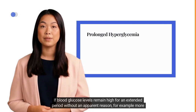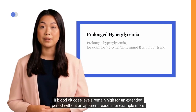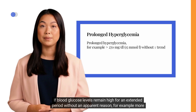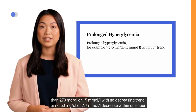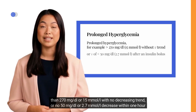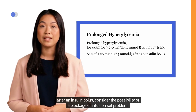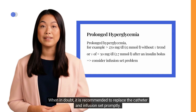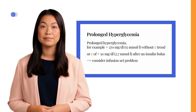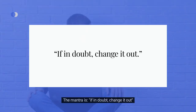If blood glucose levels remain high for an extended period without apparent reason — for example, more than 270 mg/dL or 15.0 mmol/L with no decreasing trend, or no 50 mg/dL or 2.7 mmol/L decrease within 1 hour after an insulin bolus — consider the possibility of a blockage or infusion set problem. When in doubt, it is recommended to replace the catheter and infusion set promptly. The mantra is: if in doubt, change it out.